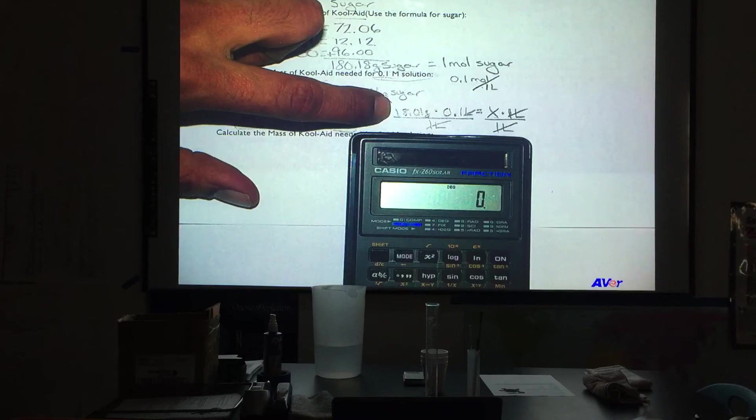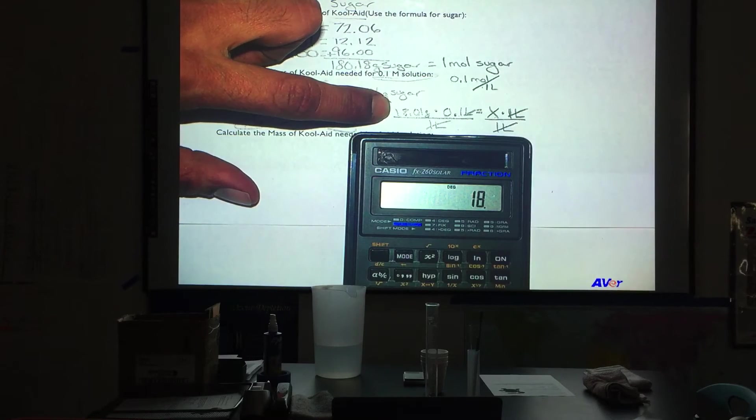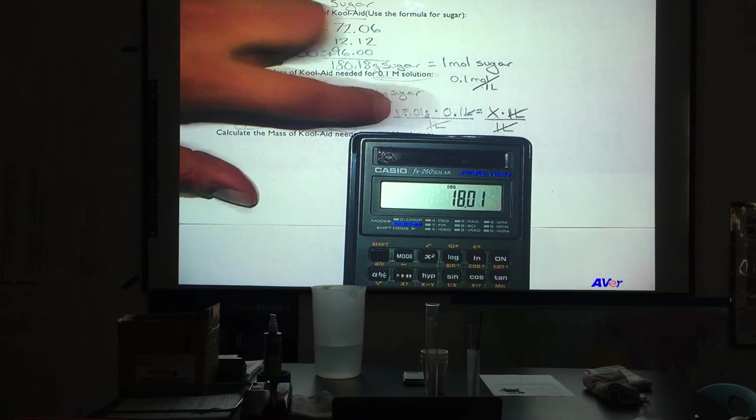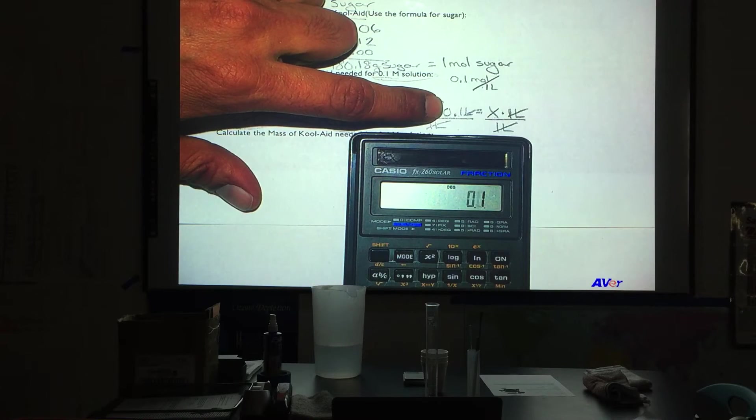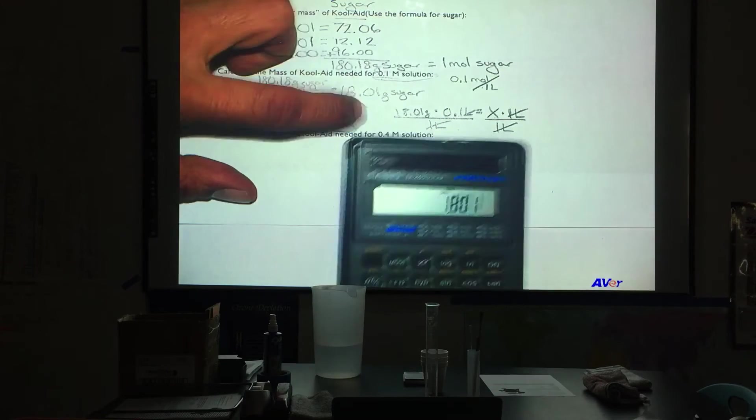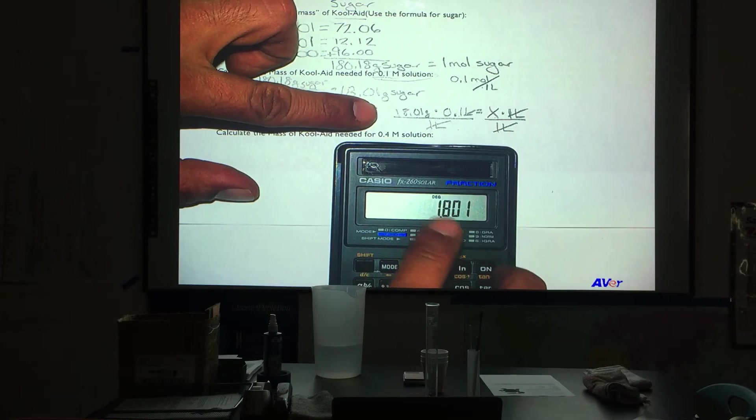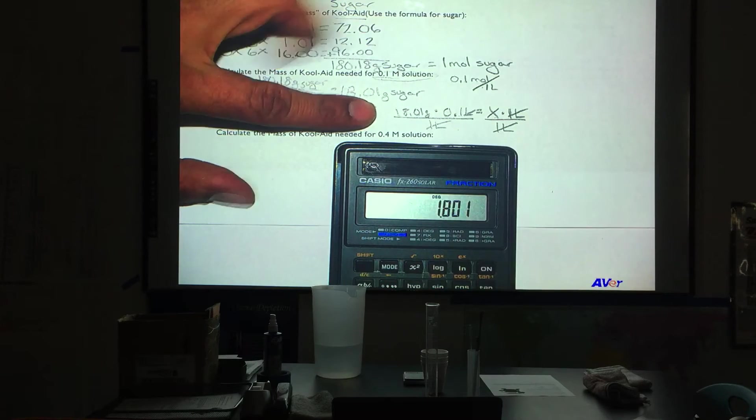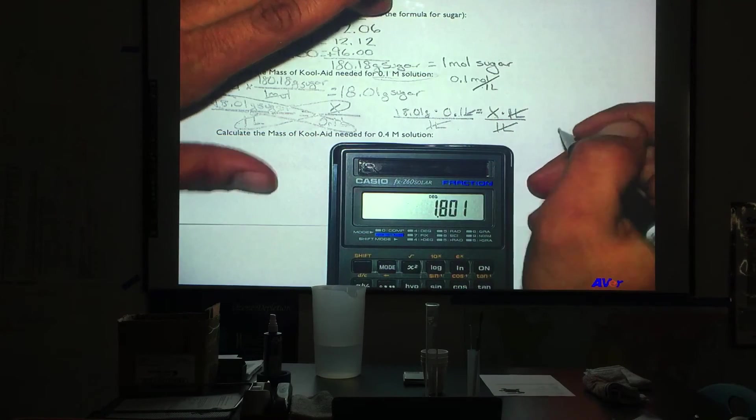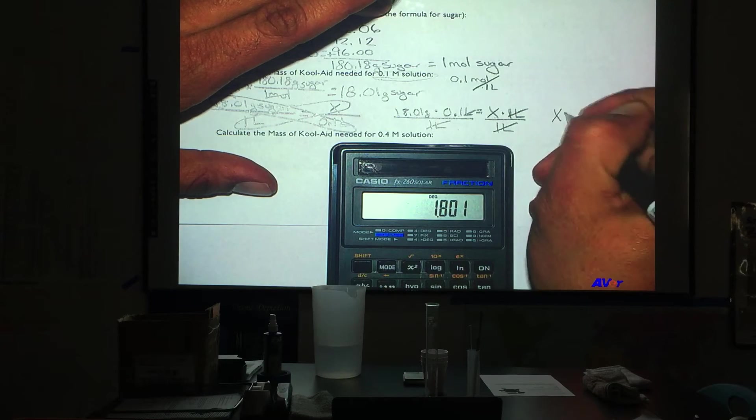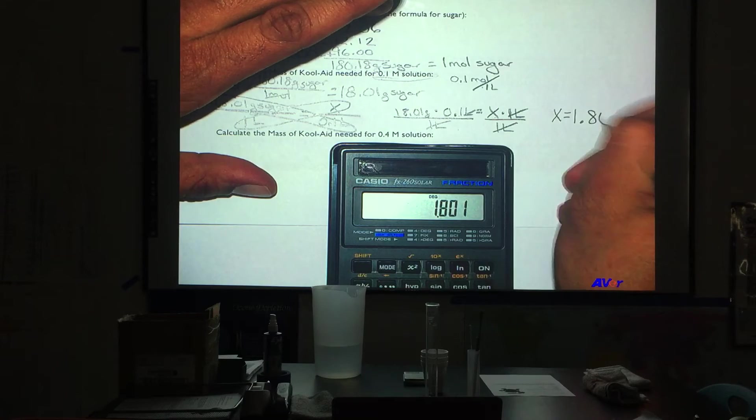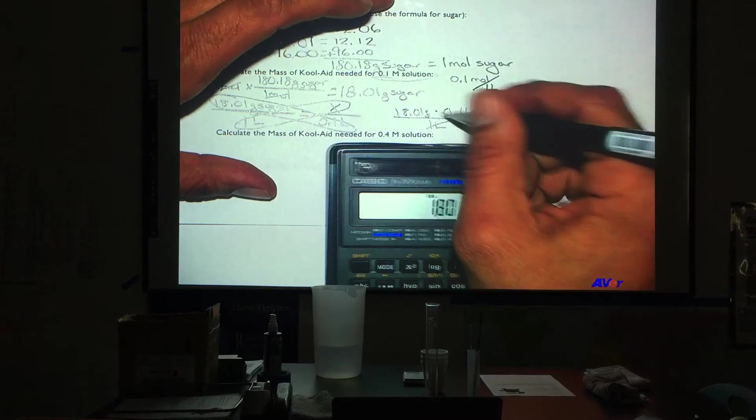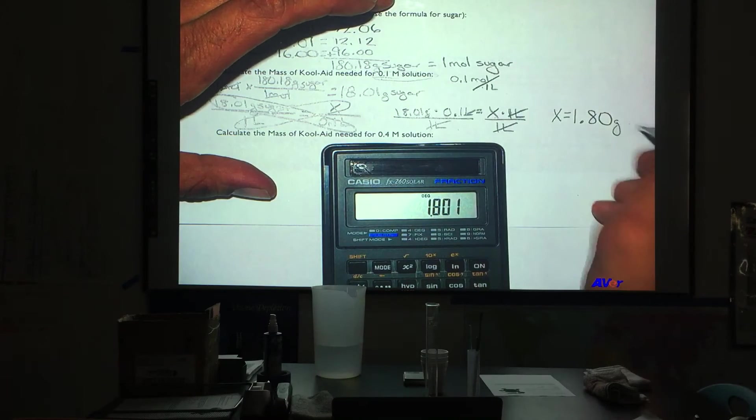So we will take that 18.01 times 0.1 equals. And that tells us we have 1.801. Since we are rounding to two decimal places, we are going to say x equals 1.80. What is the unit? Grams. And we are talking about sugar.